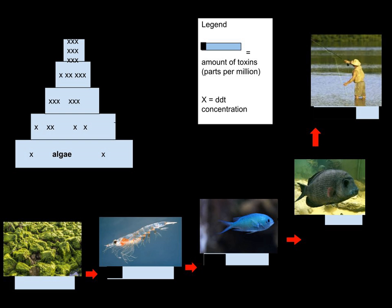More recently, similar conclusions were reached regarding substances remaining in organisms and not being diluted to non-threatening concentrations. The success of top predatory bird recovery — bald eagles and peregrine falcons in North America — following the ban on DDT use in agriculture is testament to the importance of biomagnification.